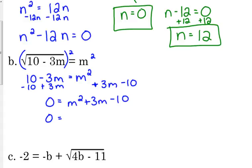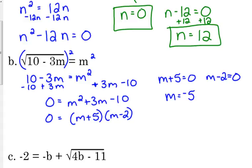So I'm going to add 3m to move it, and I'm going to subtract 10 to move that term. So factor this one, that would be m plus 5 times m minus 2. So we've got m plus 5 is equal to 0, m minus 2 is equal to 0, so we get negative 5 and positive 2.